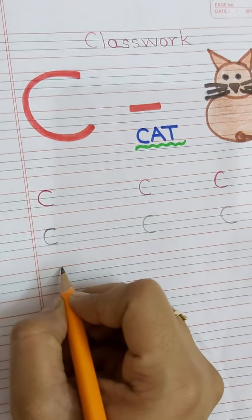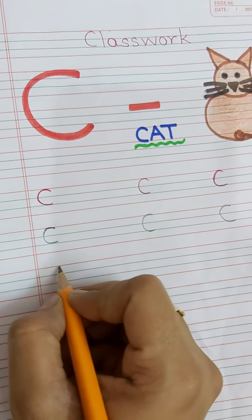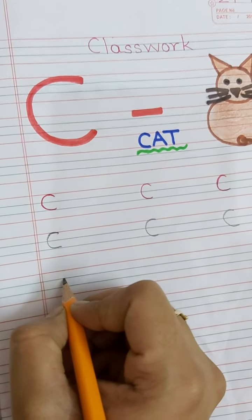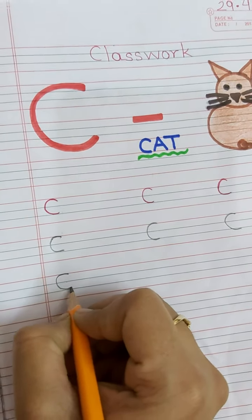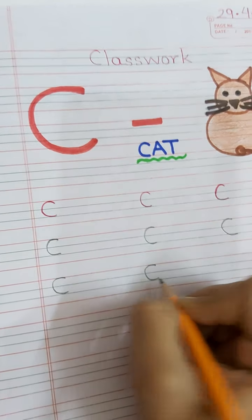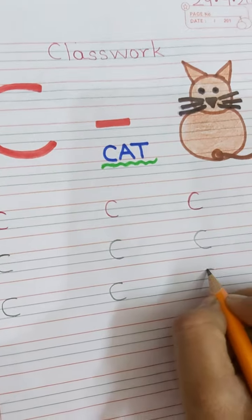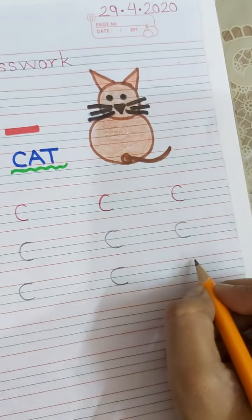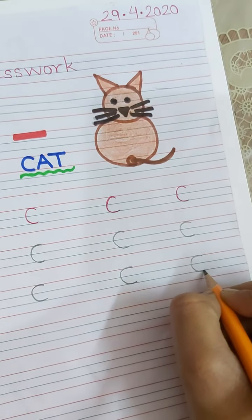Now, once again, look here. Aapko kitnay line mein likna hai? How many lines? One, two, three. Like this. And you have to make a curve. Beeta, thudhaa goal ho ga. Thik hai? Semi circle. Aise. C. Like this. Okay.